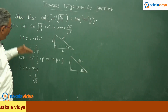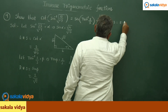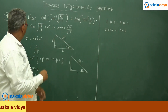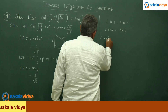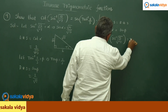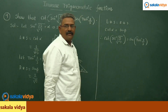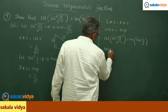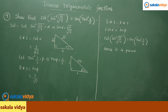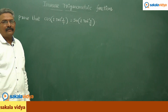Now, what do you observe? LHS equals RHS — both are 2/√13. That means cot α equals sin β. Substituting back the values of α and β: cot(sin⁻¹(√13/17)) = sin(tan⁻¹(2/3)). Hence it is proved.